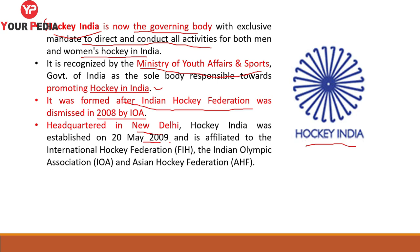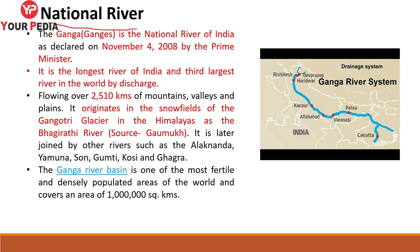The national river of India is the Ganga, as declared on 4th November 2008 by the Prime Minister of India. It is the longest river of India and the third largest river in the world by discharge. It flows over 2,510 kilometers of mountains, valleys and plains. It originates in the Gangotri Glacier in the Himalayas as the Bhagirathi River, whose source is Gomukh.